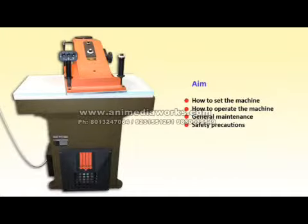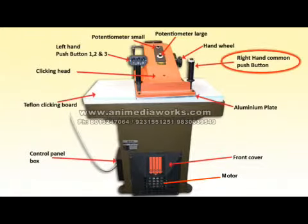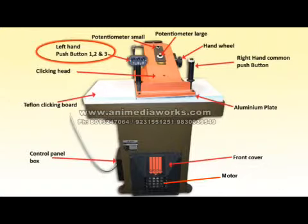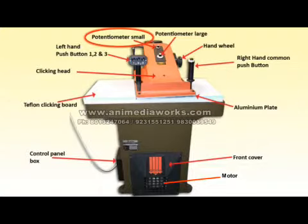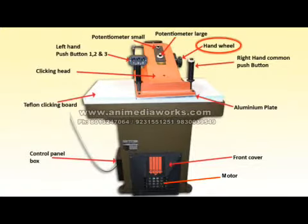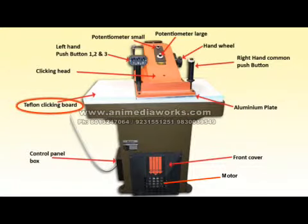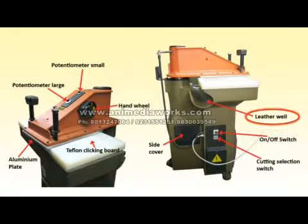Important machine parts: right hand safety button, left hand safety button — both to be operated simultaneously. Push buttons 1, 2 and 3. Potentiometer small — for pressure adjustment for push button 1. Potentiometer large — for pressure adjustment for push buttons 2 and 3. Hand wheel for vertical movement of the cutting beam. Motor. Aluminium plate. Teflon clicking board. Main switch. Leather well.